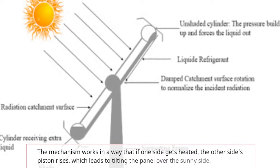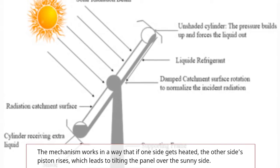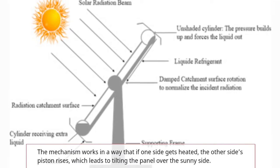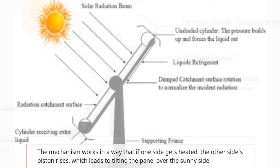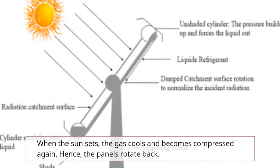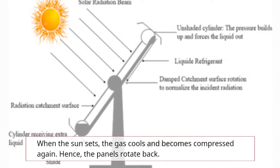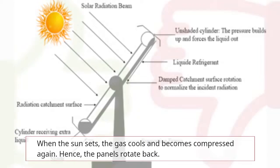The mechanism works in a way that if one side gets heated, the other side's piston rises, which leads to tilting the panel over the sunny side. When the sun sets, the gas cools and becomes compressed again. Hence, the panels rotate back to their original position.